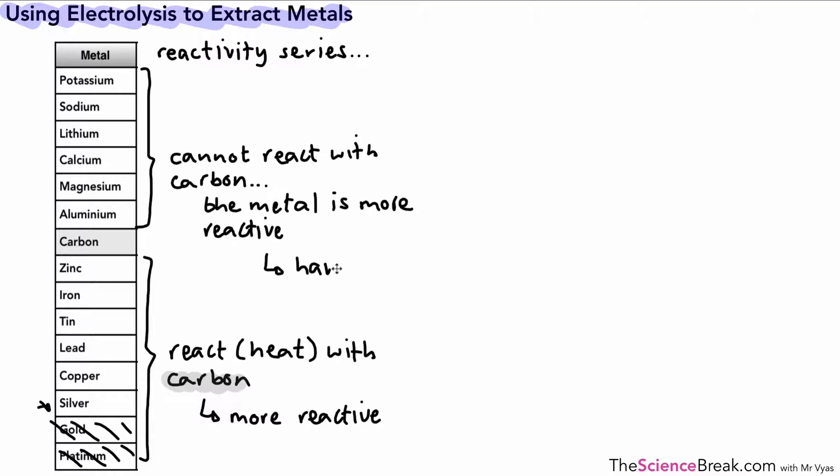So we cannot use the method of heating with carbon. What we can use though is a method called electrolysis, which we've talked about in the previous video. But we can use electrolysis to extract those metals, and the example that we're going to look at closely is that of aluminum.